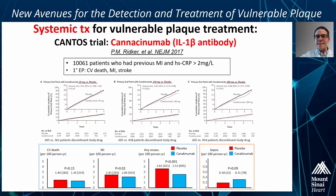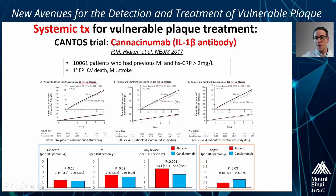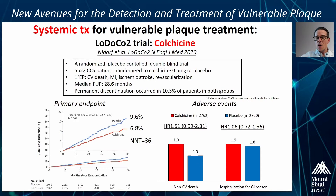Conversely, the IL-1β antibody canakinumab, at least at the highest investigated dose, did show a significant reduction in the primary endpoint of cardiovascular death, MI, or stroke, with effects on both MI and revascularization — but not on death — and can therefore be considered a successful anti-inflammatory drug. However, the limitation comes with increased hazards for sepsis, which is a major limitation, as are the costs of treatment.